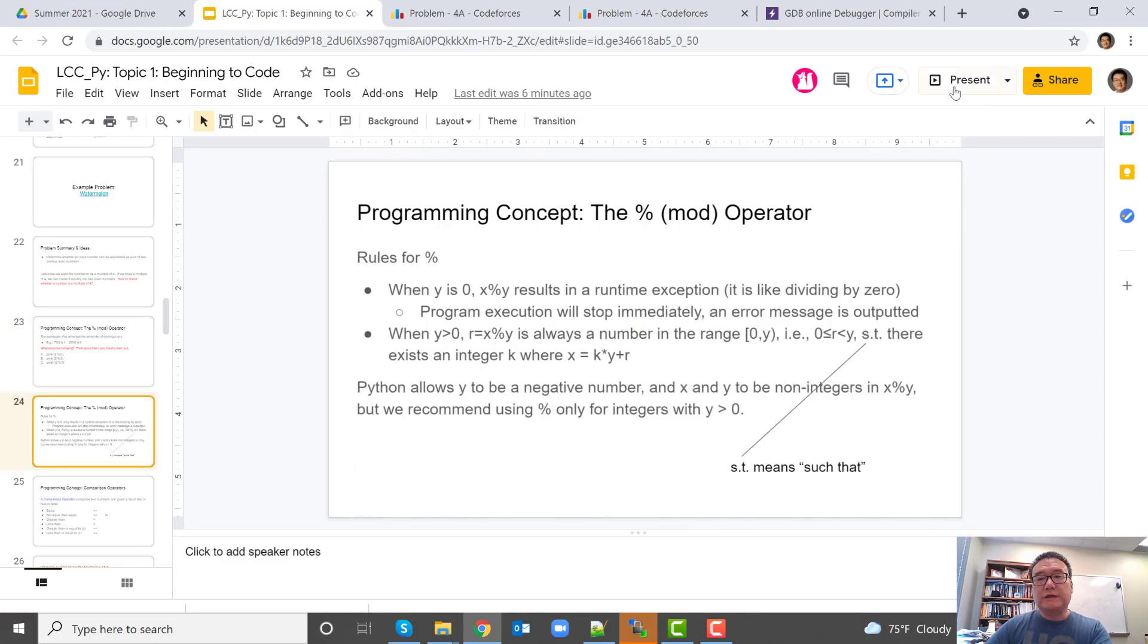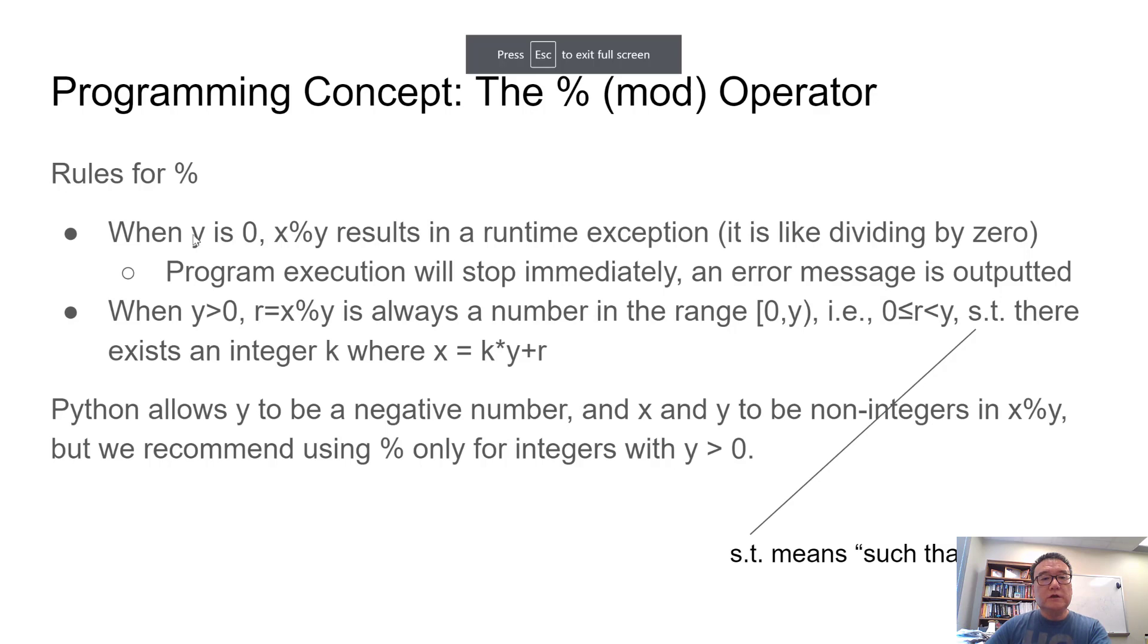And more precisely, these are the rules. When y is 0, x percent y will result in an error. Because this is dividing by 0. And that means the execution will stop. And we will see an error message from the STD ERR screen. And when y is greater than 0, so x mod y is always a number in this range. This square bracket means that it could equal 0. So r is greater than equal to 0. And this parenthesis means that it cannot equal y. So it has to be less than y. So that there exists an integer k where x equals k times y plus r.